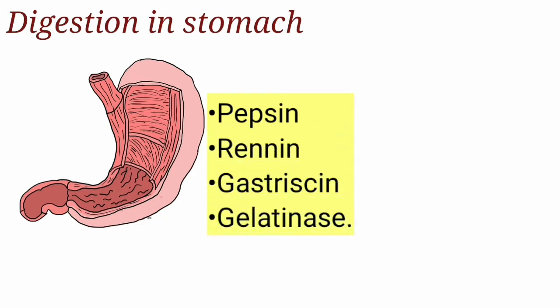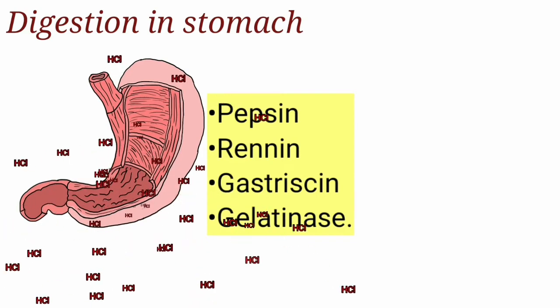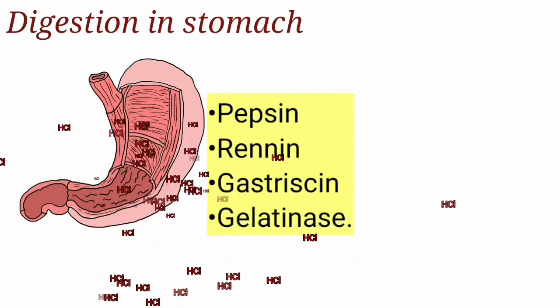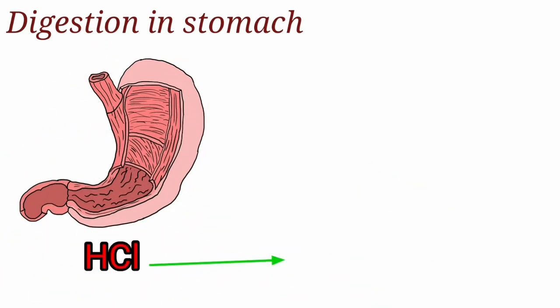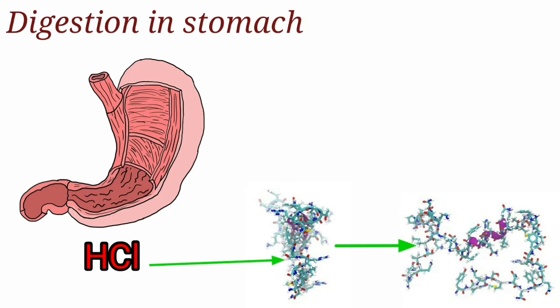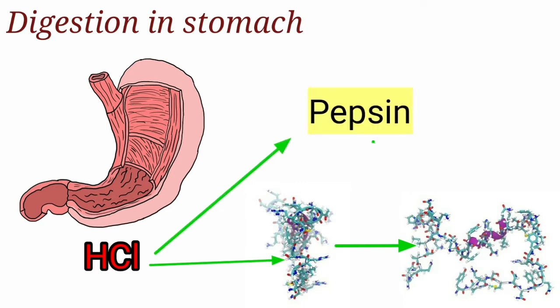The hydrochloric acid secreted by the parietal cells unfolds the proteins and activates the proteolytic enzyme pepsin. This type of activation is called zymogen activation.